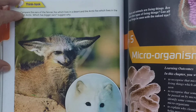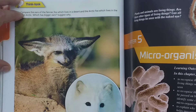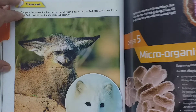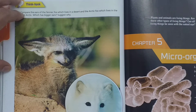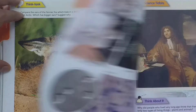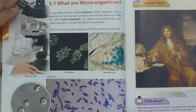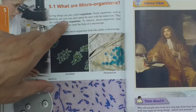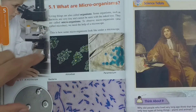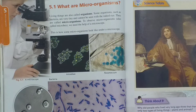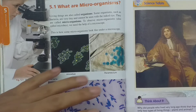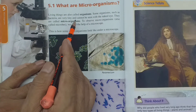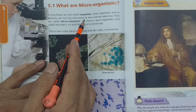We are continuing with Chapter number 5 of Science, for Grade 6. Microorganism is our new chapter — Chapter number 5 — and the first topic of this chapter is: What are microorganisms? You can see this on the top of the page, page number 94. Living things are also called organisms.